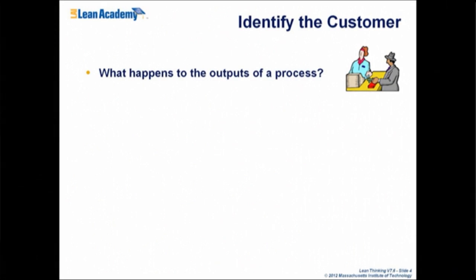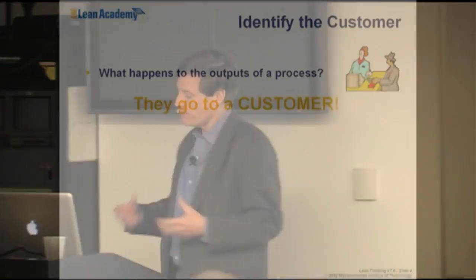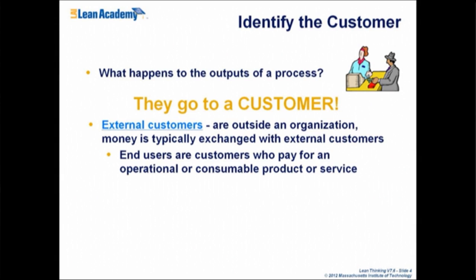Let's talk about a customer. What happens to the outputs of a process? They go to a customer. Just like 'supplier,' we've got to be careful not to get too hung up on the terminology. A customer may be somebody who buys something in the retail sense, or it may be somebody who gets value out of the process. External customers are the people who pay for the process to take place — they may or may not be the end user. In aerospace, for example, government acquisition means the people who buy things are not the people who use them, so there's a distinction between the purchasing customer and the end user.